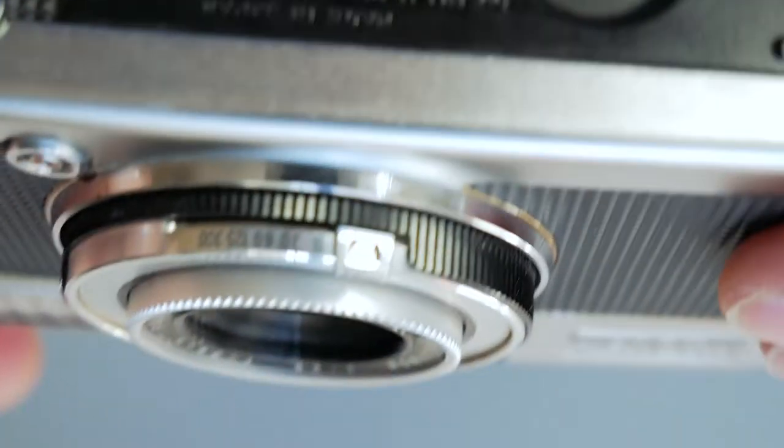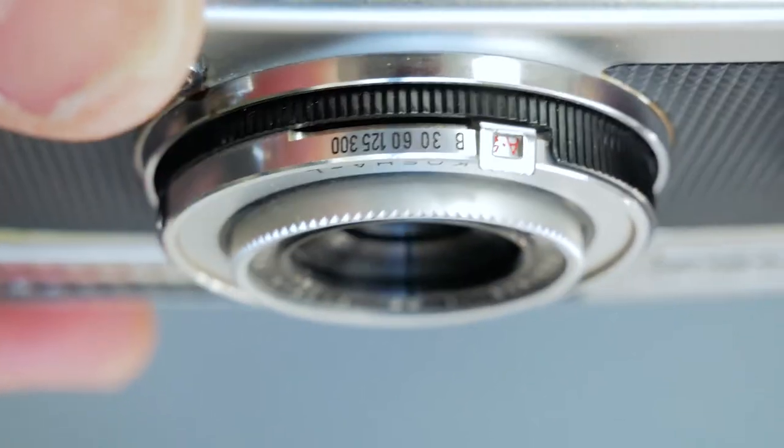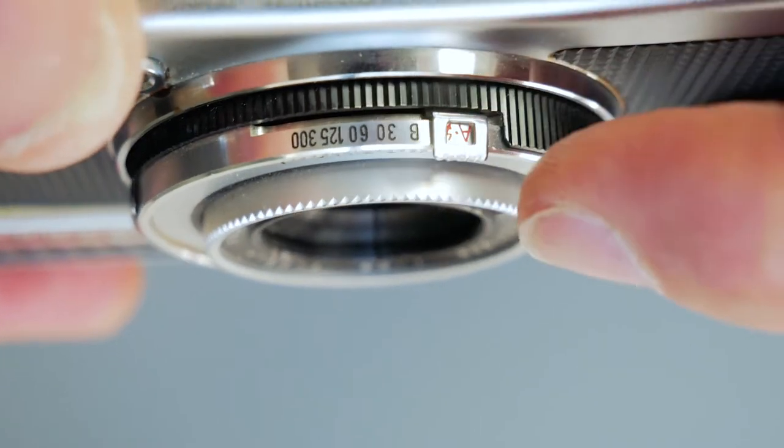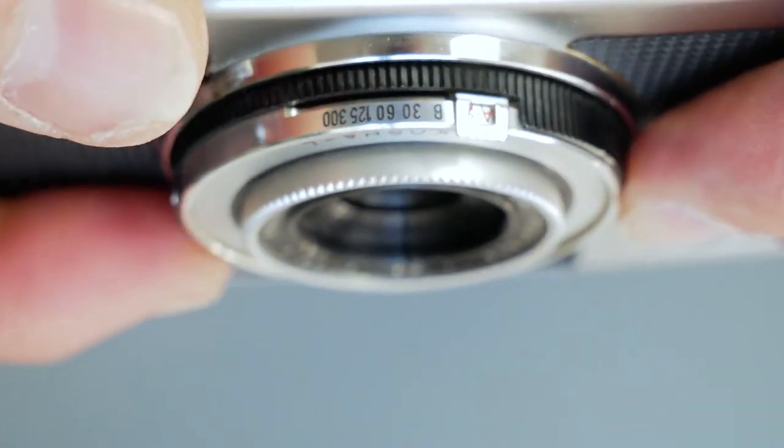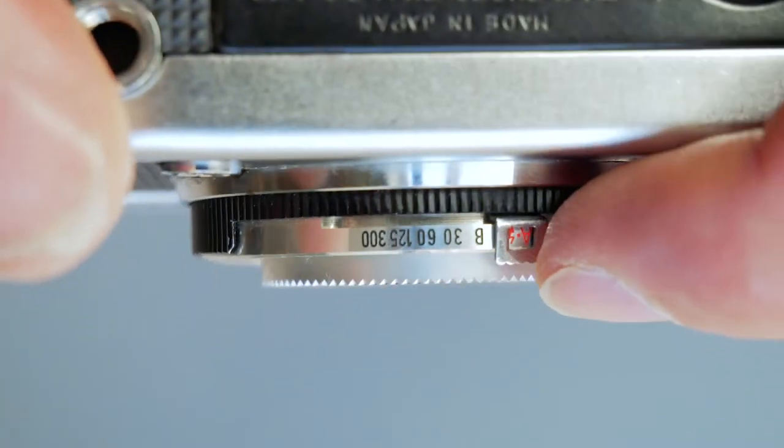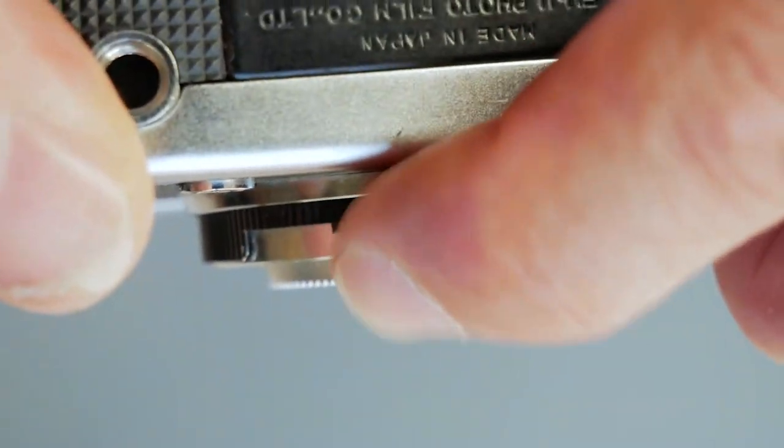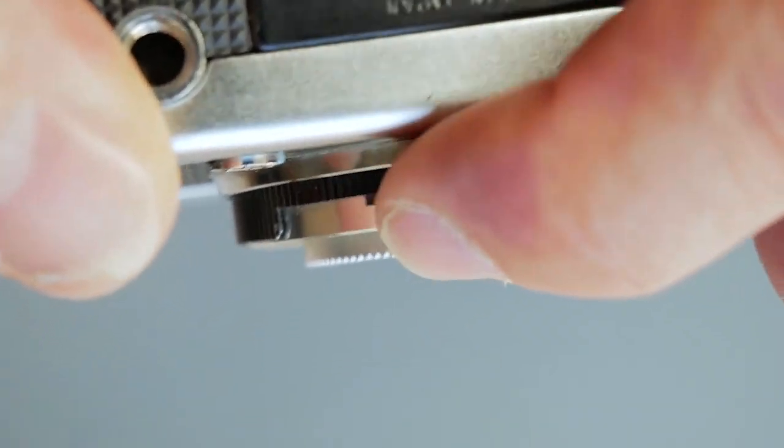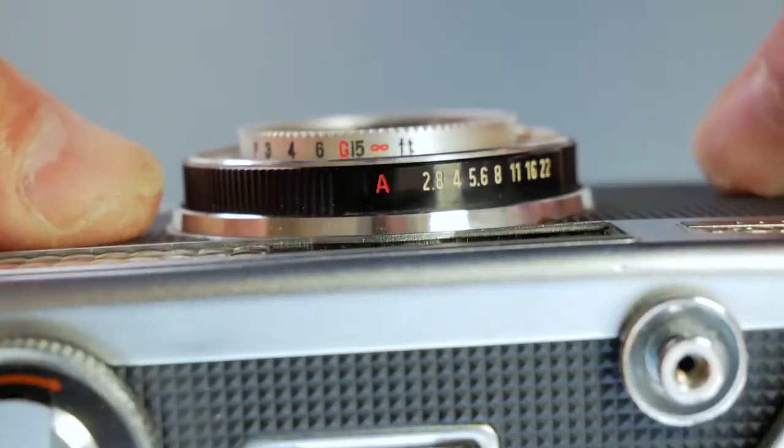On the bottom of the lens, you can actually set the shutter speed. When it's in auto, that won't move anywhere, it stays where it is. Take it off auto, screw it to there, you can then set the shutter speed.